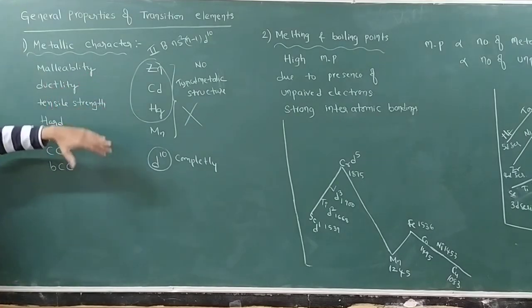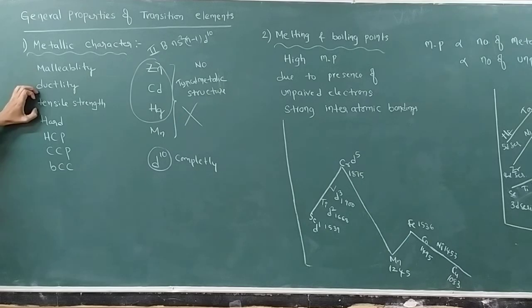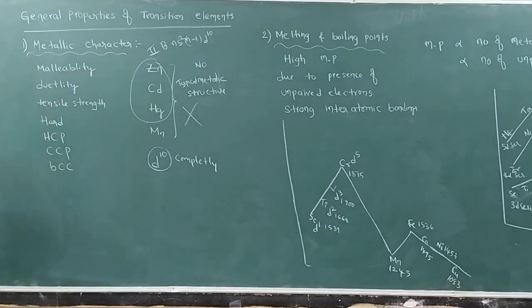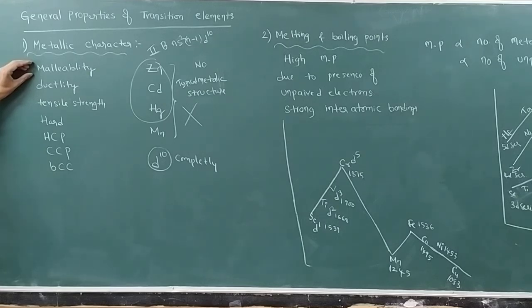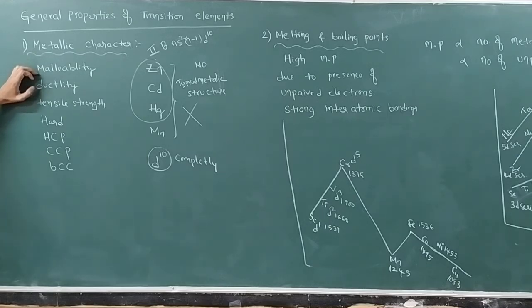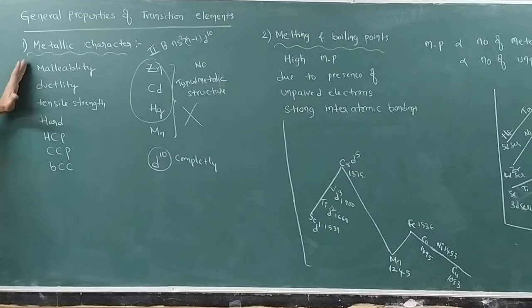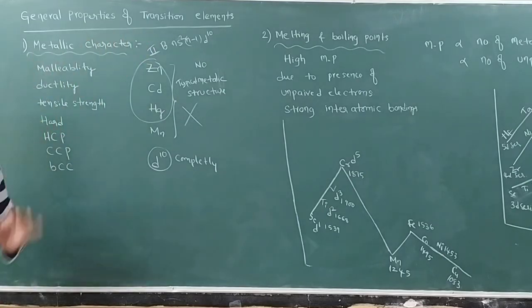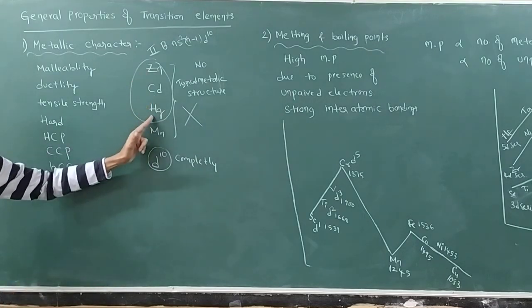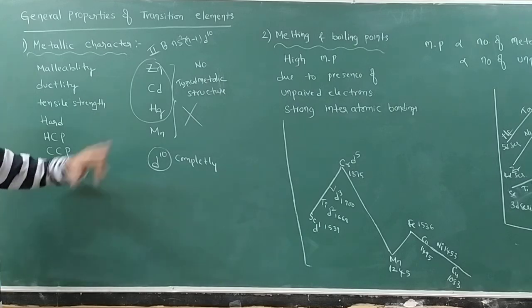Coming to the metallic character: malleability, ductility, tensile strength, and hard nature. Malleability means beating a metal into a thin sheet — like beating an aluminum or iron sheet with a hammer. Ductility means drawing wires from the metal, like gold or copper into wires. Tensile strength means load-bearing capacity. All these properties are generally exhibited by transitional elements, except zinc, cadmium, and mercury, which have completely filled configuration.